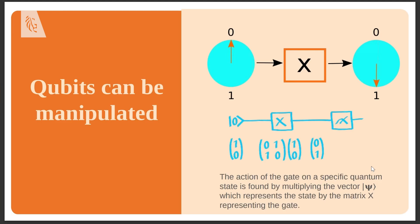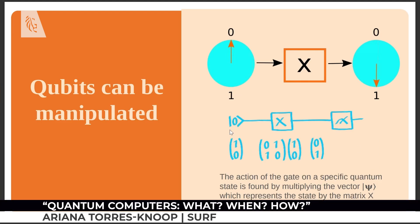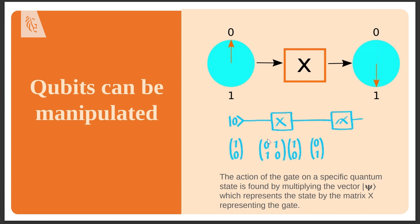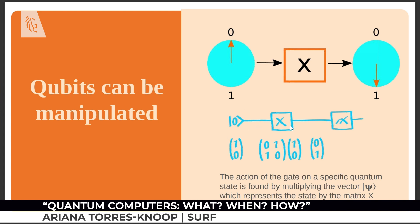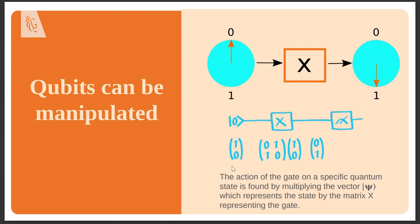From a mathematical point of view, we take our initial state vector — here alpha equals one and beta equals zero for state zero — and apply a matrix representing the gate to get the new state vector. The X gate moves us from alpha equals one, beta equals zero, to alpha equals zero, beta equals one. In circuit notation, we start with state zero, apply gate X, then measure.